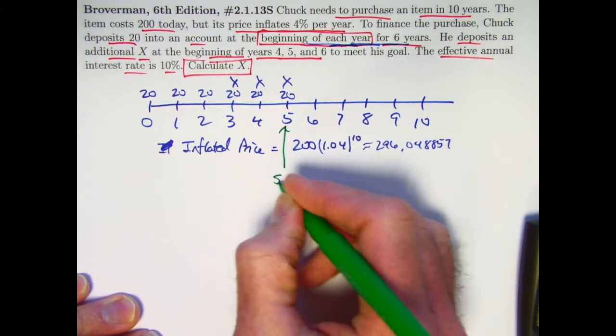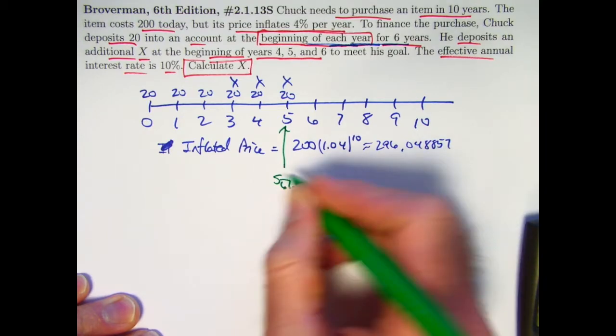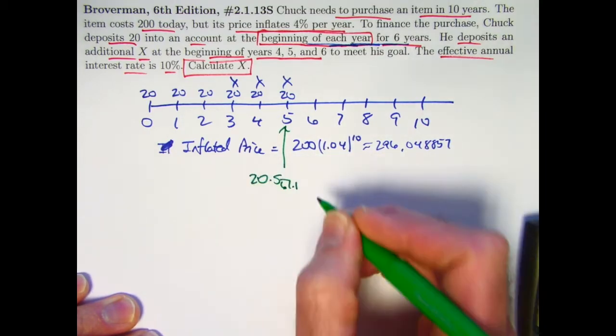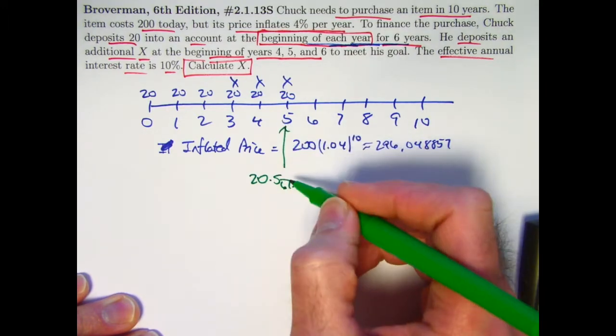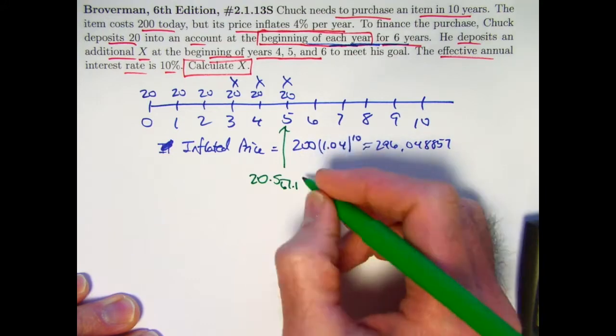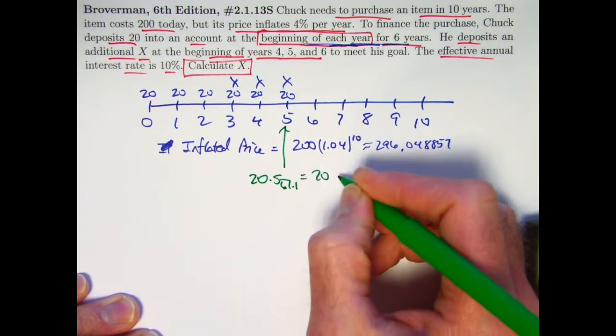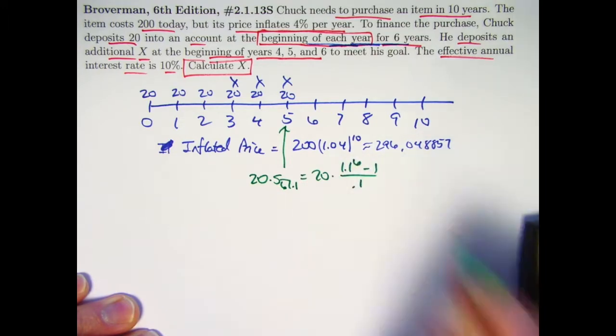You could call this S angle 6. It's with a 10% interest rate. And we are depositing 20 instead of one, so I multiply it by 20. This will be the future value at time 5 of this series of six payments, thought of as an annuity immediate. So it's going to be 20 times 1.1 to the 6th minus 1 over 0.1.